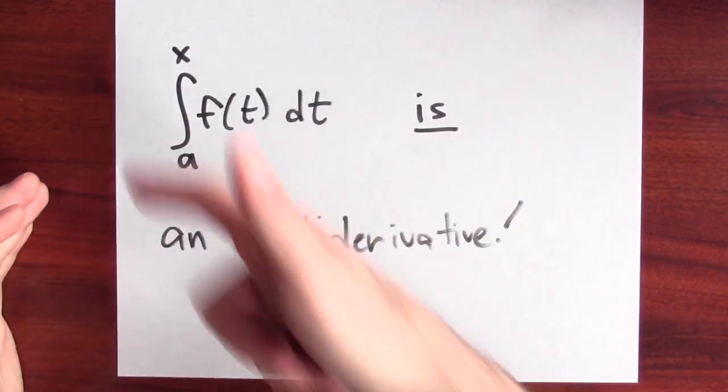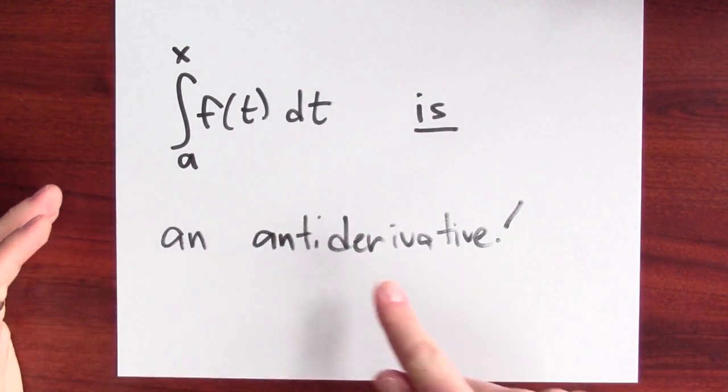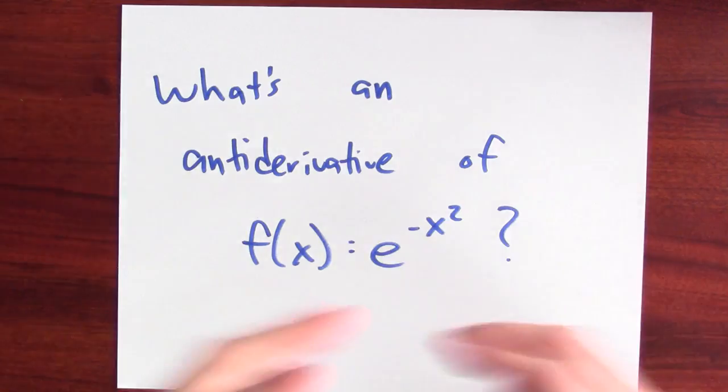The accumulation function, big F, is an antiderivative of little f. Well, this, I mean, this is really remarkable.